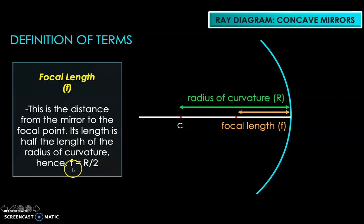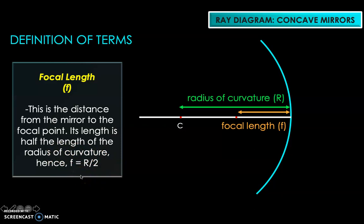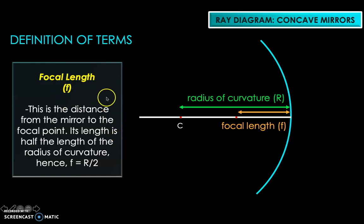Therefore, f (focal length) equals the radius of curvature divided by two. We have to remember this because it's needed in the mathematical discussion in the next videos. Also note that the symbol for focal length is small letter f, while the focal point is capital F — so don't confuse those two abbreviations.